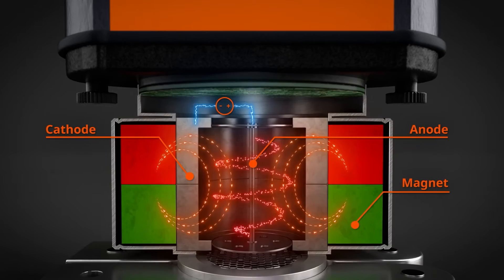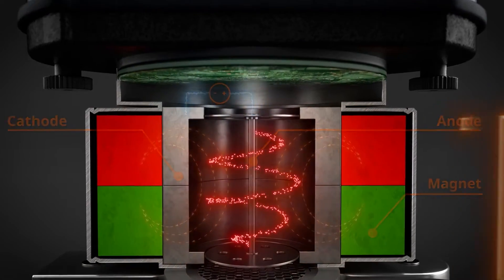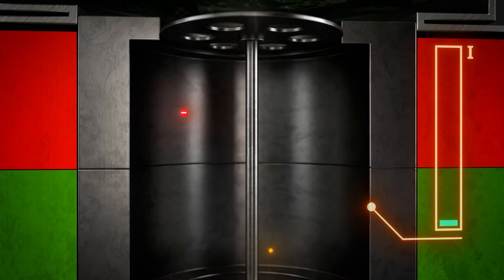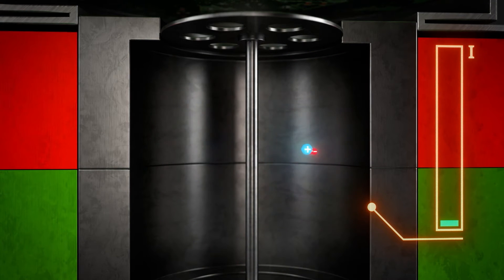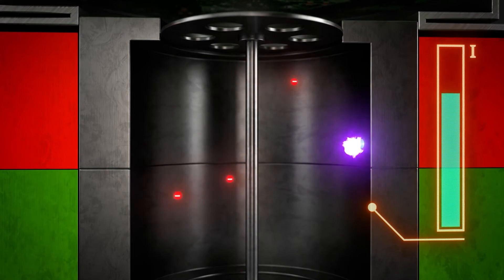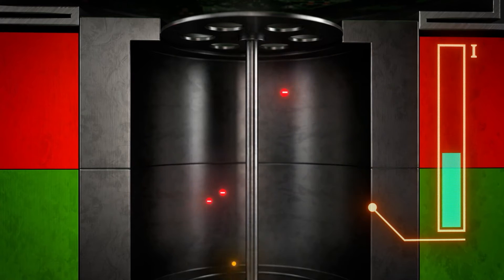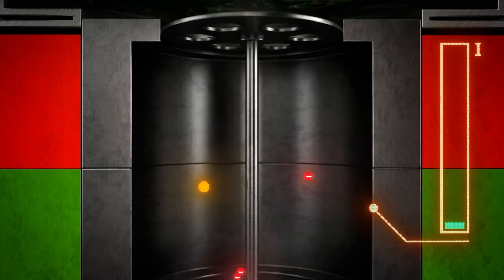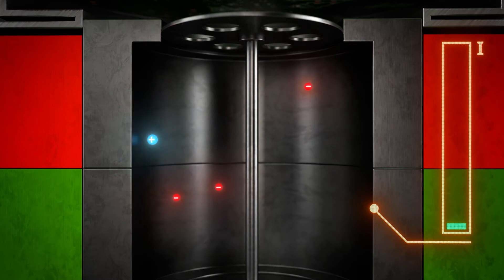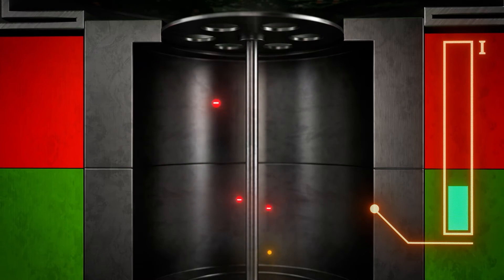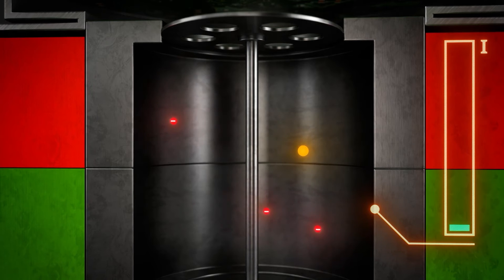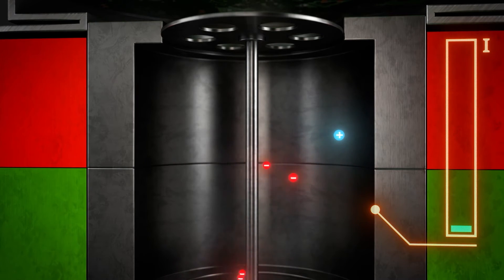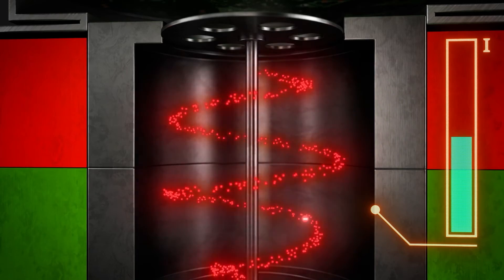The magnetic field causes electrons to move in a spiral formation around the central anode. This results in the neutral molecules of the process gas being ionized. When a molecule is hit by an electron, it splits into one electron and one cation. The cation is attracted to the cathode and collides with it, generating an electrical signal.